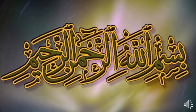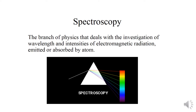आज हम अपना next chapter number 20 स्टार्ट करेंगे और वो concern करता है बुनियादी तौर पर spectroscopy पर। अगर हम इसकी definition करें तो: spectroscopy is the branch of physics that deals with the investigation of wavelength and investigation of intensities of electromagnetic radiation emitted or absorbed by an atom. जब भी हम physics की उस branch को discuss करेंगे जिसमें किसी atom के emission से या atom के absorption से कोई wavelength निकलती है, उस wavelength की value कितनी है, उसकी frequency कितनी है और उसकी intensity कितनी है।